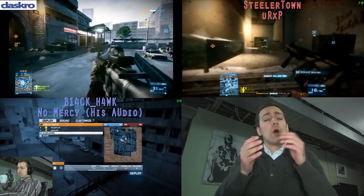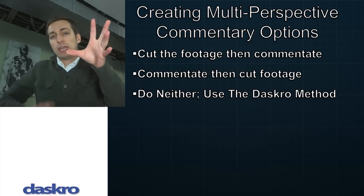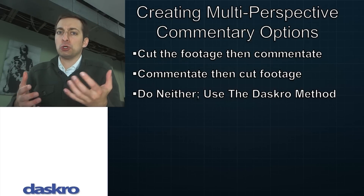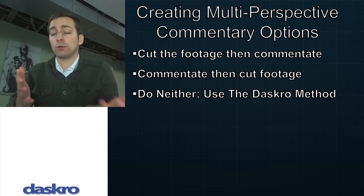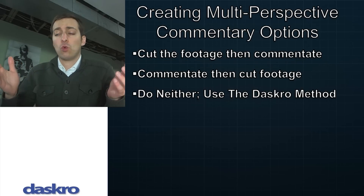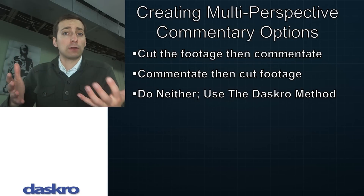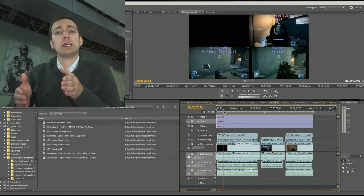In that clip, I went from one person's perspective to another person's perspective, all while giving commentary at the same time. How do we go about creating that if we didn't have any special tools? We basically have two options. We can take multiple perspectives, download them from YouTube or get them directly from individuals, into multiple video files. We can then take all those video files and put them into Adobe Premiere or Sony Vegas, whatever we're using, and sync them up.